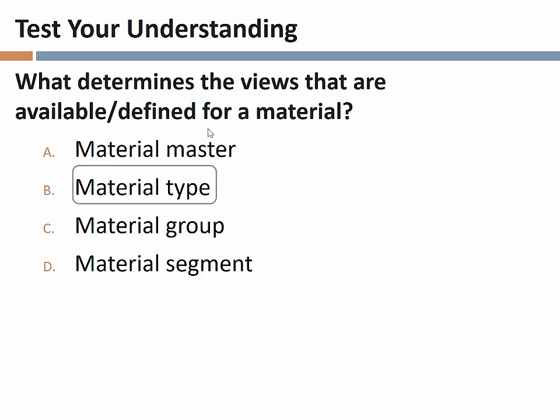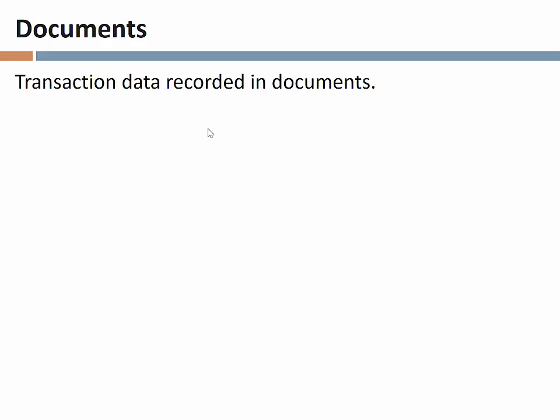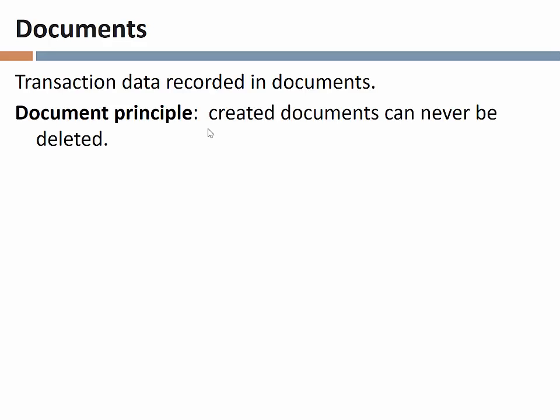In our discussion of enterprise systems we've talked about a lot of things, and we just have a couple of smaller topics to close out. Let's talk about documents and the importance of documents in any enterprise information system. Most of our data capture, data reporting, and workflow happens in the context of documents. Transaction data is recorded in transaction documents, and we will see an abundance of those in our enterprise information system. The document principle tells us that once a document has been created, it can never ever be deleted.